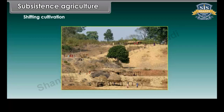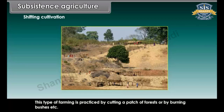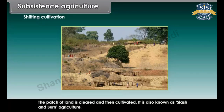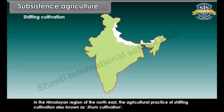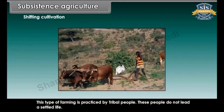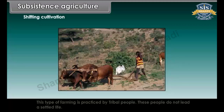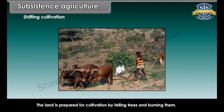Shifting cultivation is practiced by cutting a patch of forest or by burning bushes. The patch of land is cleared and then cultivated. It is also known as slash and burn agriculture. Within India, shifting agriculture or jhum is practiced in the hill tracts of Eastern and North Eastern India. This type of farming is practiced by tribal people who do not lead a settled life. The land is prepared for cultivation by felling trees and burning them.